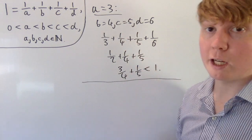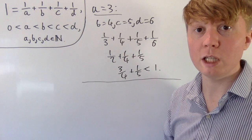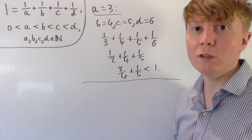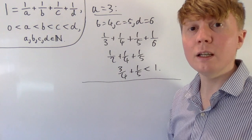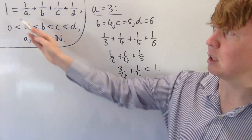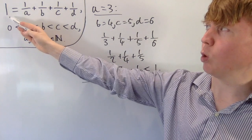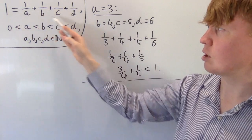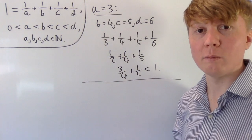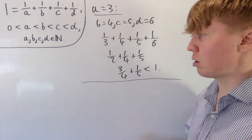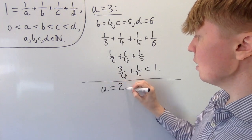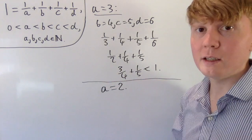So if we take a equal to three, or even bigger, the sum becomes even smaller. Even in the best case scenario where a is three and we take b, c, and d as small as possible, this still doesn't work and our sum can't reach one. So we can rule out a being greater than or equal to three. Because a has to be a positive integer, the only other options are a is one and a is two. But we can rule out a equals one, since then one over b, one over c, and one over d would all have to be zero, which doesn't work. So the only possibility left is a equals two.